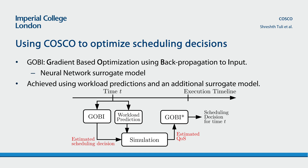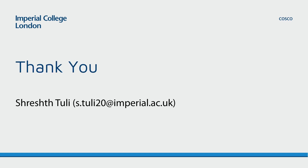This interactive dynamic between GOBI and the co-simulator is called GOBI star. GOBI star can make a more informed prediction of QoS metrics for any interval and hence perform better than GOBI. To run the GOBI star model, COSCO provides the latest environment state to the surrogate models, runs the GOBI optimization loop till convergence, uses LSTM-based workload predictions and GOBI's output to run a simulation trace, and the QoS estimate is sent to the GOBI star loop before the final decision is executed. Thank you for your kind attention. In the next video, we shall discuss the implementation details of the framework. For any queries, please feel free to send me an email. See you in the next one. Cheers.